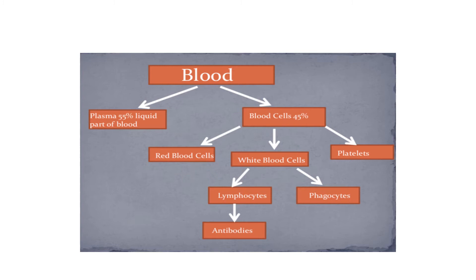There are two main types of white blood cells called phagocytes and lymphocytes. Lymphocytes are responsible for the production of antibodies, which are produced in response to fight against infections. Phagocytes engulf bacteria and are responsible for the removal of dead cells from the blood.